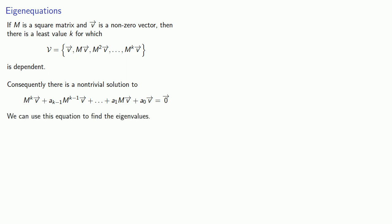Remember that if M is a square matrix and v is a nonzero vector, then there's a least value k for which the sequence v, Mv, M squared v, and so on, is dependent. Consequently, there's a non-trivial solution to a linear combination of these vectors equal to the zero vector, and we can use this equation to find the eigenvalues.